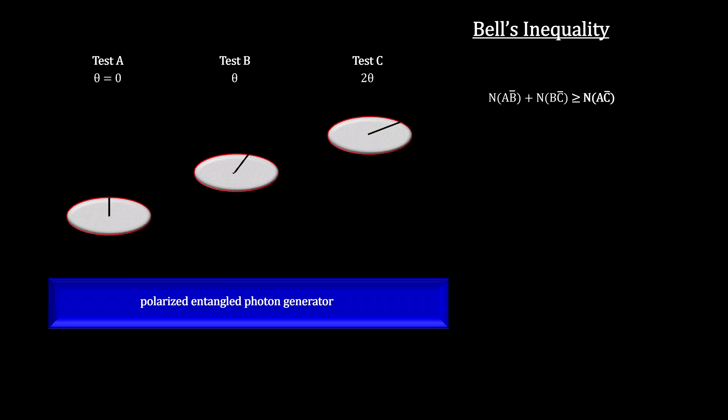Remember that our assumption is that the states of the entangled particles depend only on their original hidden variables and cannot change just because there was a measurement taken on the other particle. The test was done with theta equal to 22.5 degrees.